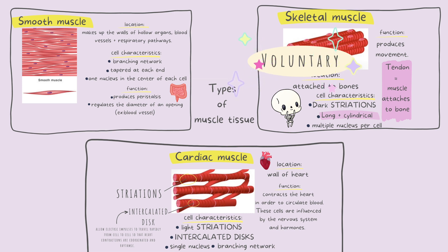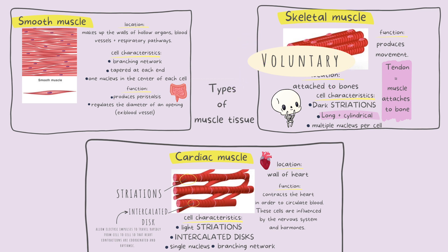Think of it like this: skeletal muscle is attached to your skeleton, and we mostly use our skeleton to move our body — running, jumping, throwing. These are all voluntary movements. So remember, skeletal is your only voluntary muscle tissue.